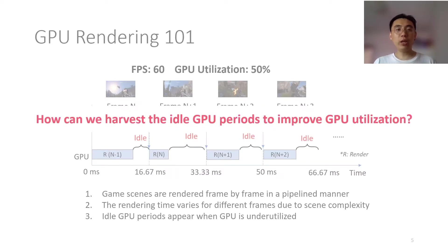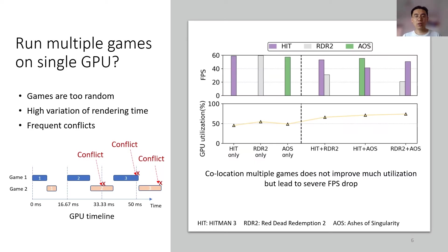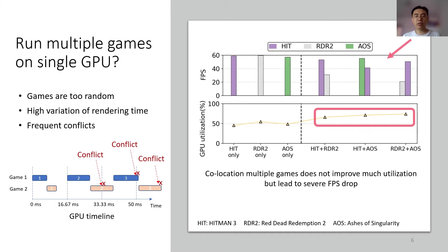Our problem is to improve the utilization of cloud gaming — how can we harvest the fragmented idle GPU periods? A straightforward idea is to run multiple games on the same GPU. However, we find this is infeasible. Games are too random with strict quality of service requirements. Frequent conflicts appear when both games render complex frames simultaneously. We tested three games, each with about 50% GPU utilization. When two are co-located, GPU utilization improves only about 20%, but FPS dropped significantly, and some games reduced rendering quality. This is unacceptable for cloud gaming services.